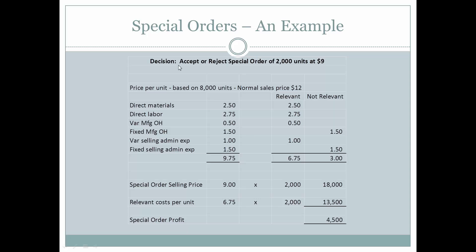So let's look at a decision to accept or reject a special order of 2,000 units at $9 per unit. Based upon 8,000 units — which is what the company normally makes — these are all of the costs associated with producing 8,000 units on a per unit basis. Their normal sales price is $12. Now let's look and see what's relevant if they want to do a special order for $9.